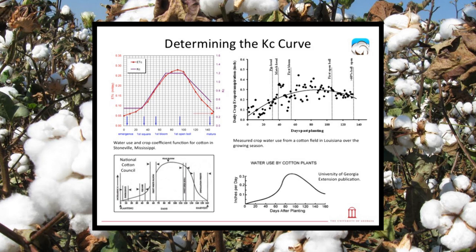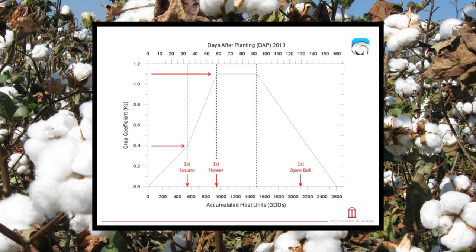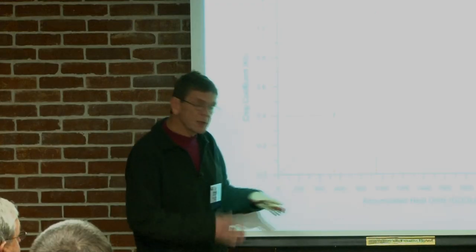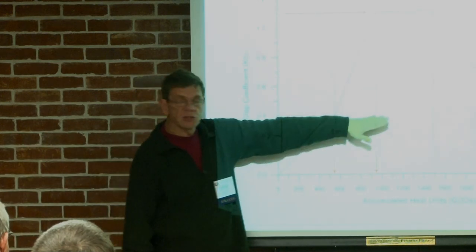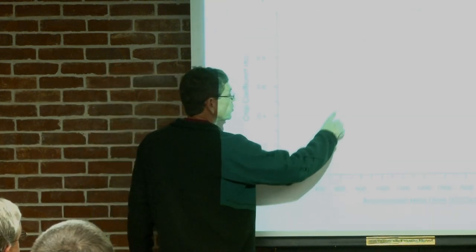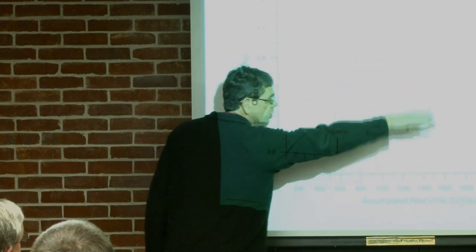One of the most difficult things we have to resolve is the crop coefficient — the factor you multiply evapotranspiration by to simulate what the crop is doing. Dr. Snyder has been very helpful in helping us understand what the cotton plant does, so we've developed curves that mimic the water use of the plant. Instead of using days after planting, we're using accumulated heat units or growing degree days, because if you have a summer with a lot of cloud cover, plants aren't developing at the same rate. This determines when plants go from one life stage to another and the crop coefficient changes with that. You can see it increases gradually to a maximum at about first bloom, stays at maximum for a while, then declines as the plant matures.